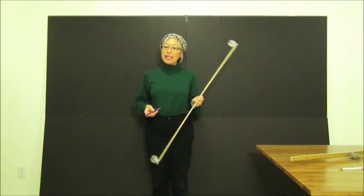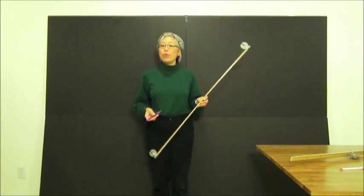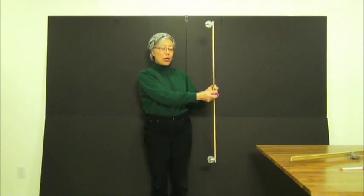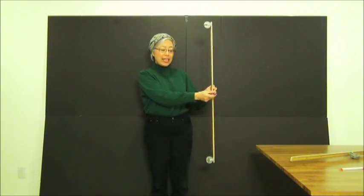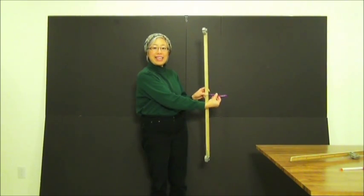When I rotate it like this, the rotational axis is here, through the middle, and is perpendicular to the meter stick.